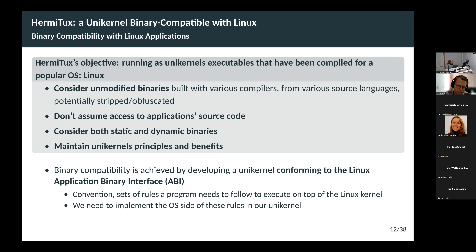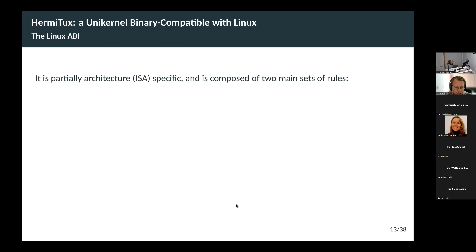How do you achieve such binary compatibility? You need to develop an operating system that understands the way applications request services from the Linux kernel and the way applications execute with the Linux kernel. This is defined as a convention called the Application Binary Interface (ABI) — a set of rules a program needs to follow to execute on top of Linux. We need to implement the OS side of these rules within our unikernel. These rules are partially architecture specific, and I divide them into two main sets: load time and runtime conventions.